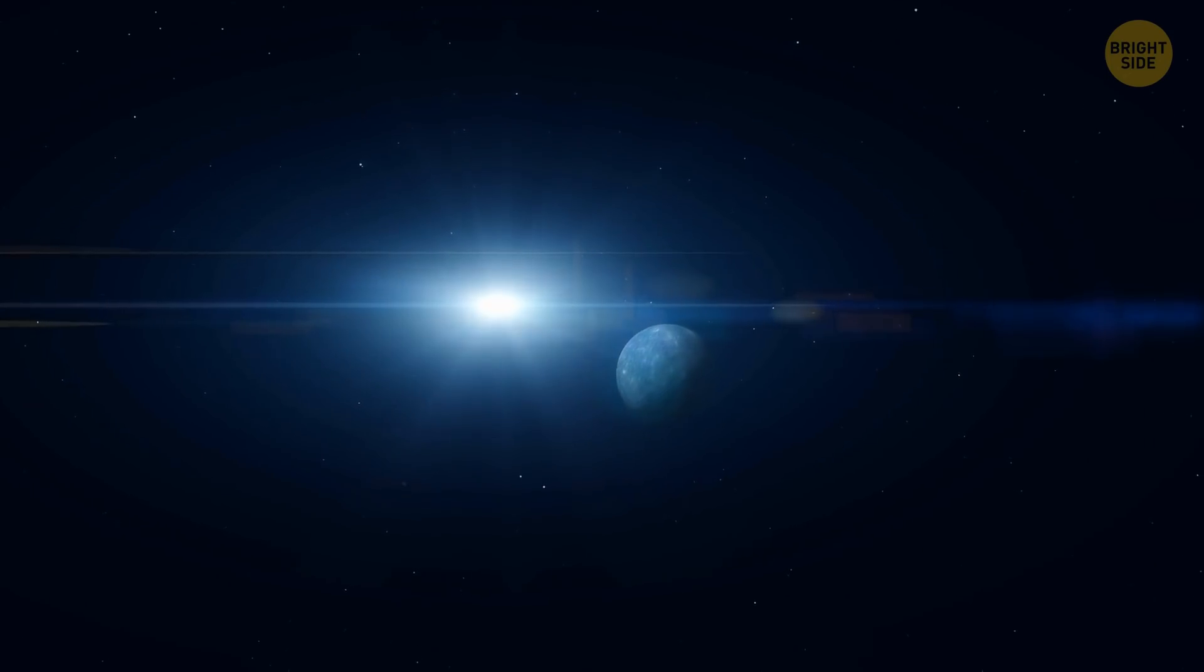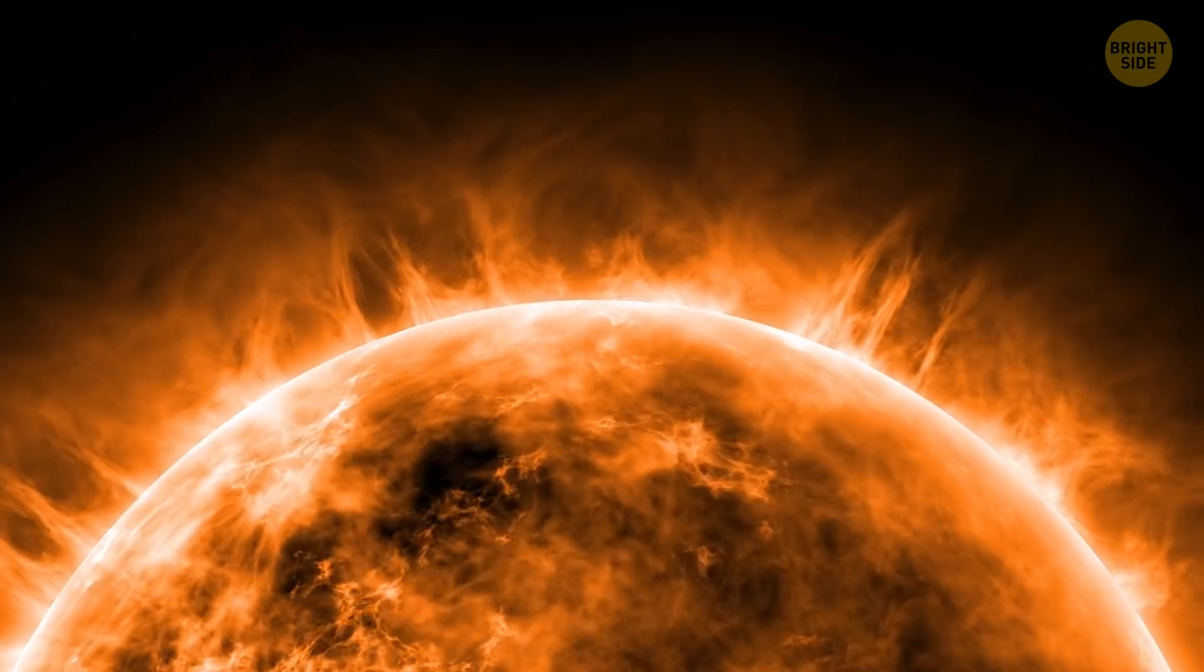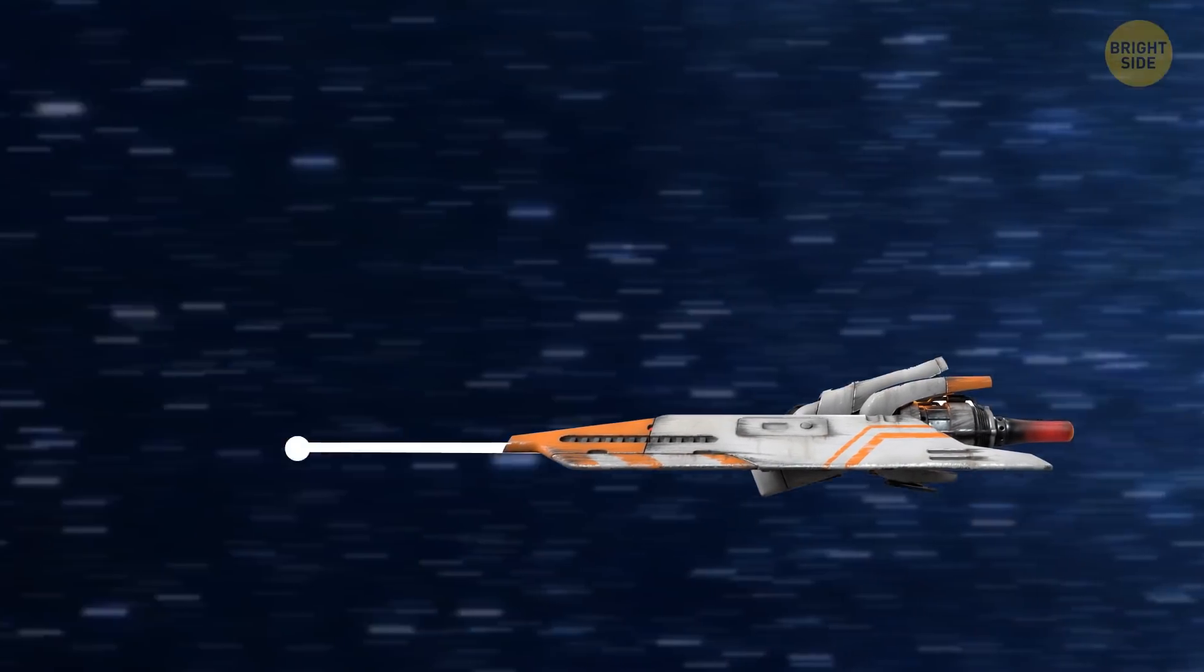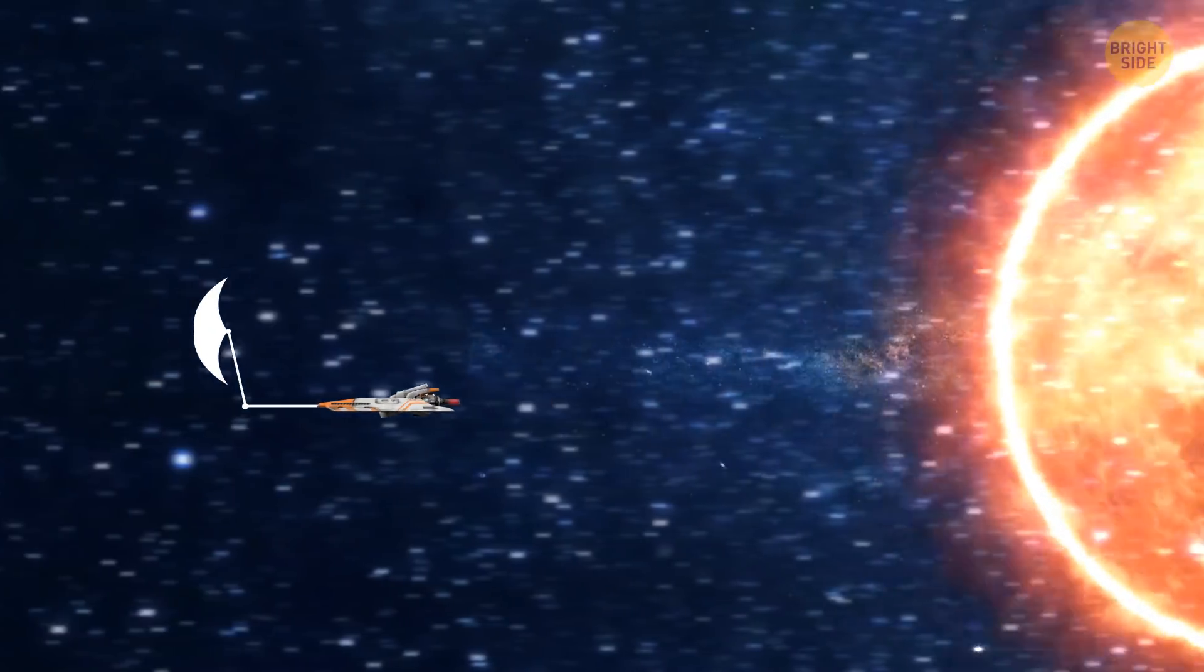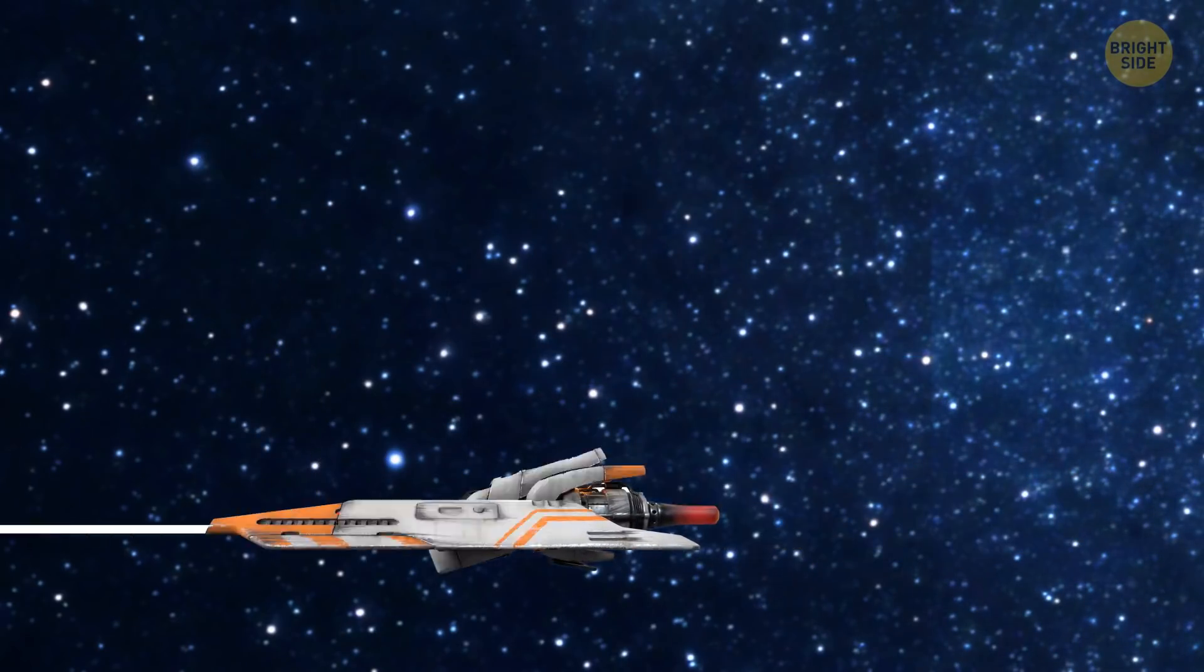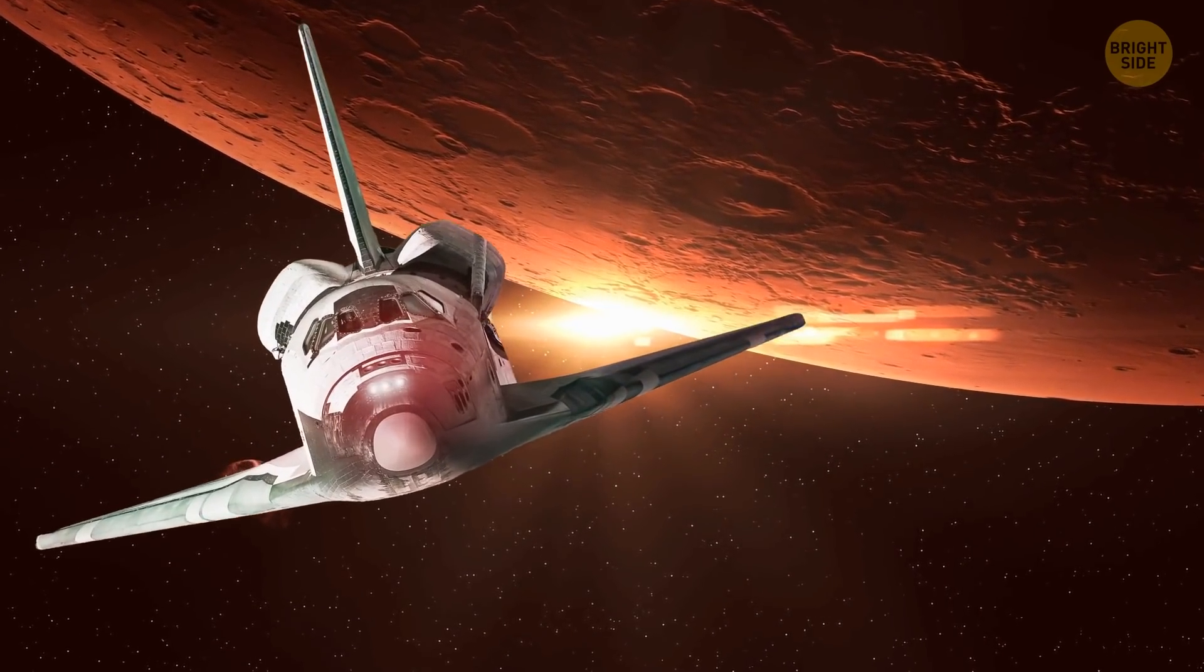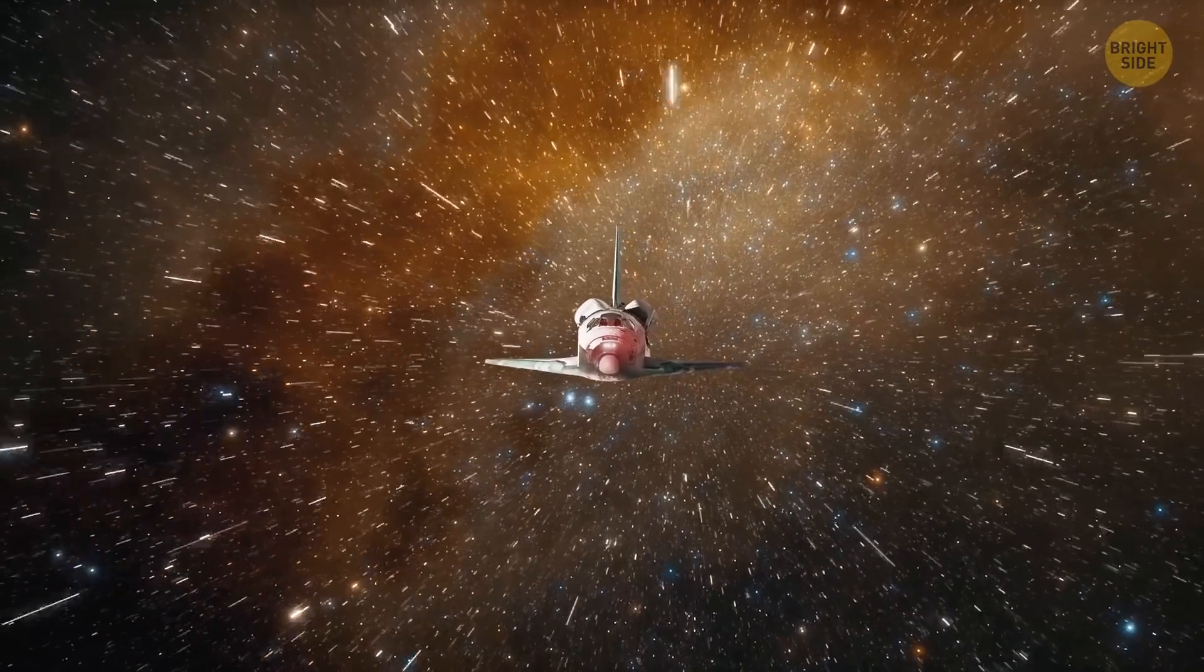But this sail technology can be used in space even without a powerful laser. We can use the sun. If we create a sail the size of a soccer field and unfold it in space, it'll start catching the sun's rays. And since the surface of the sail is reflective, the rays will bounce off the sail. This will create thrust and propel the spacecraft. One disadvantage of this technology is that we can only use it inside the solar system. In cold interstellar space, the sail won't be able to catch the sun's rays or solar wind.